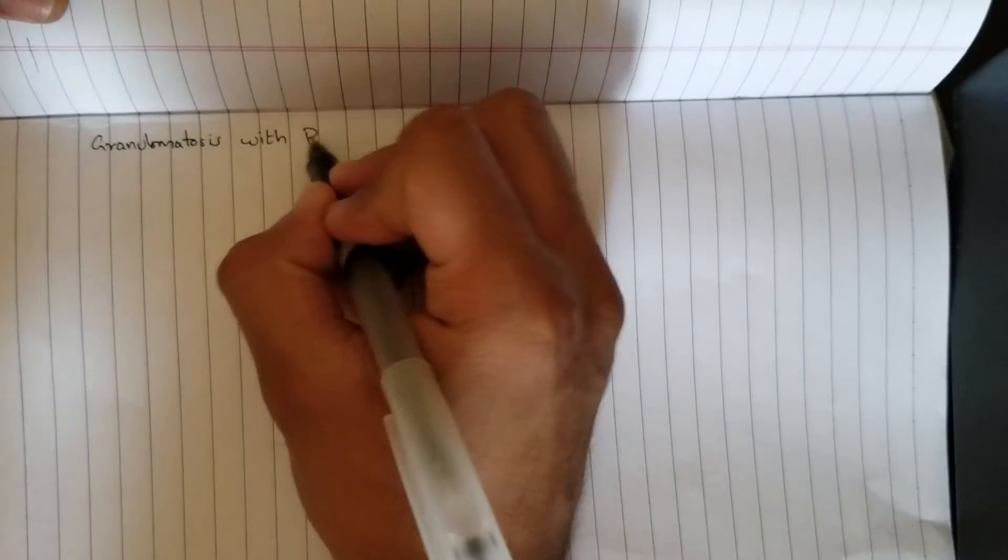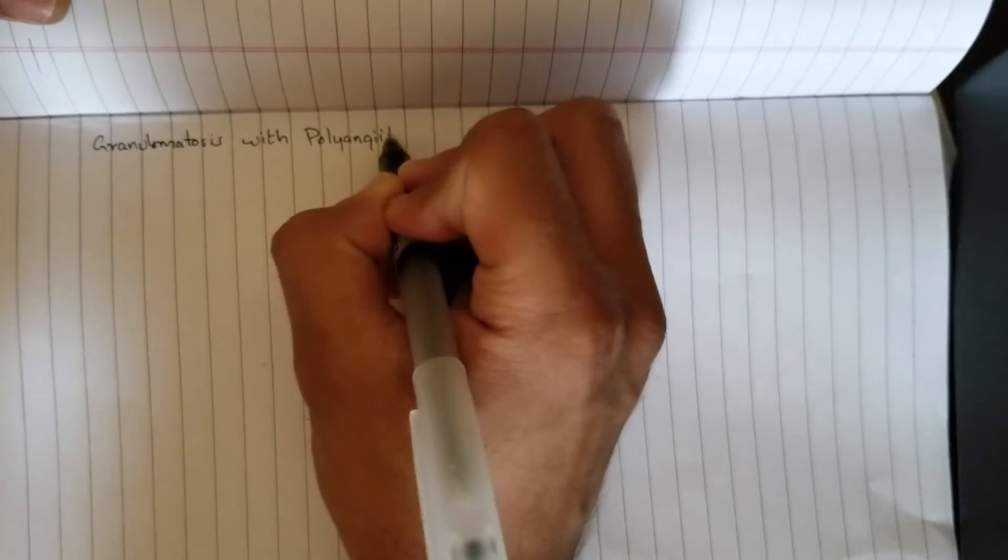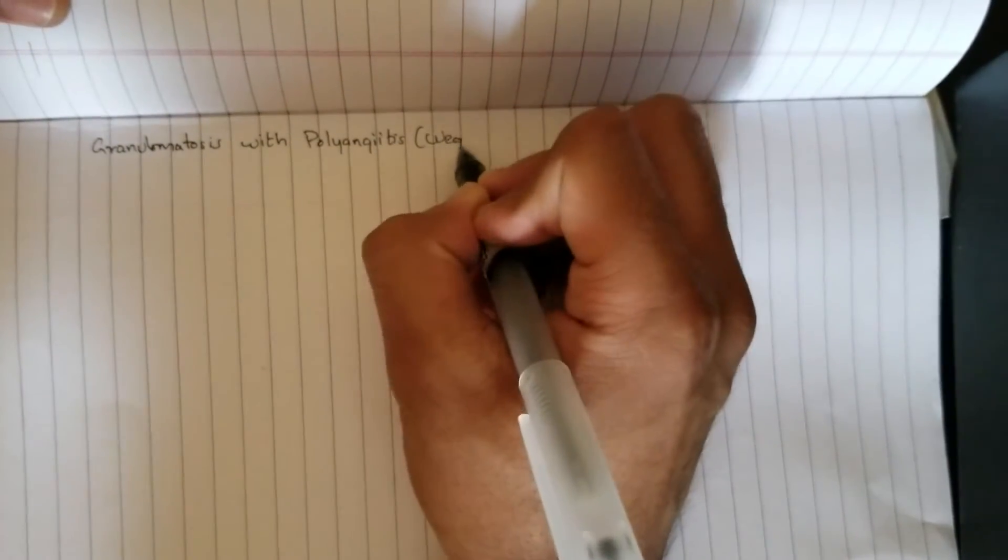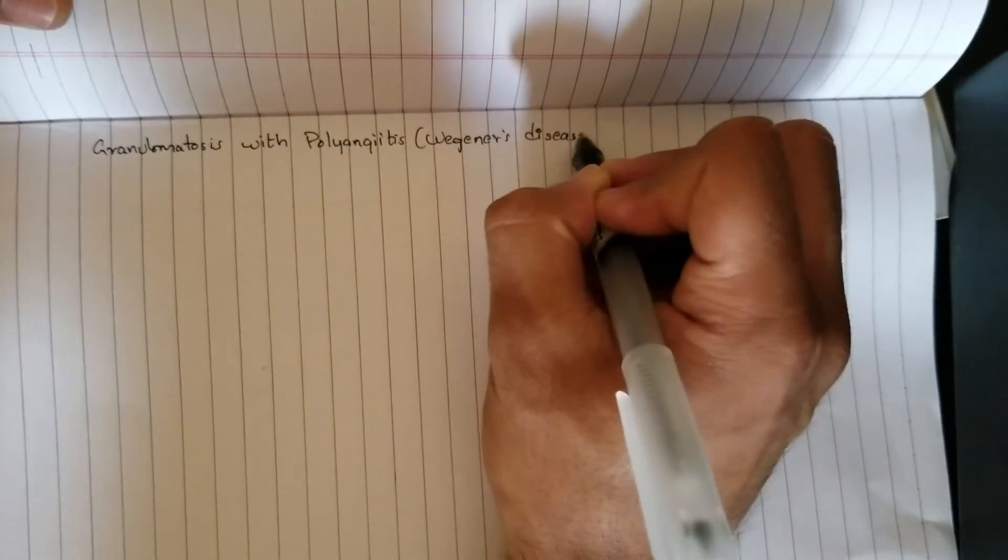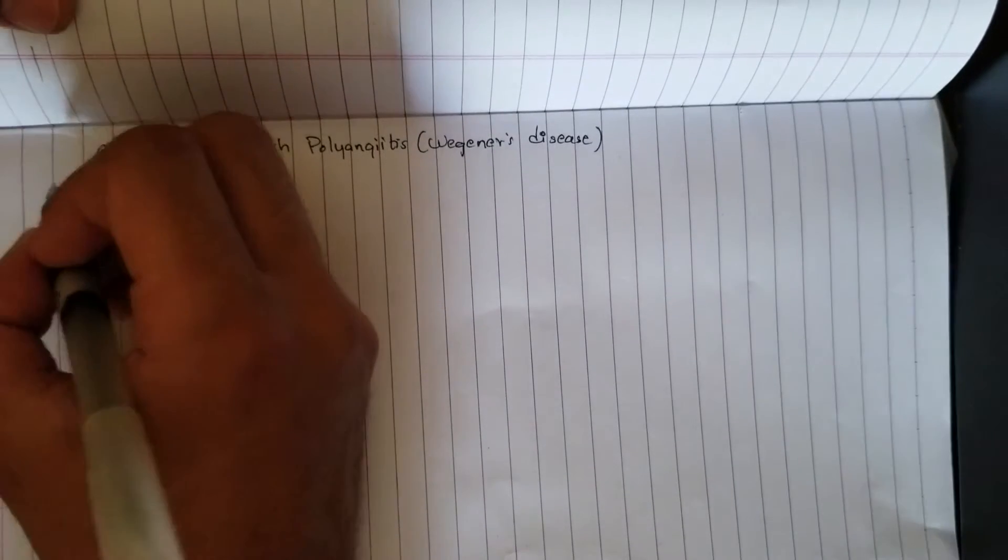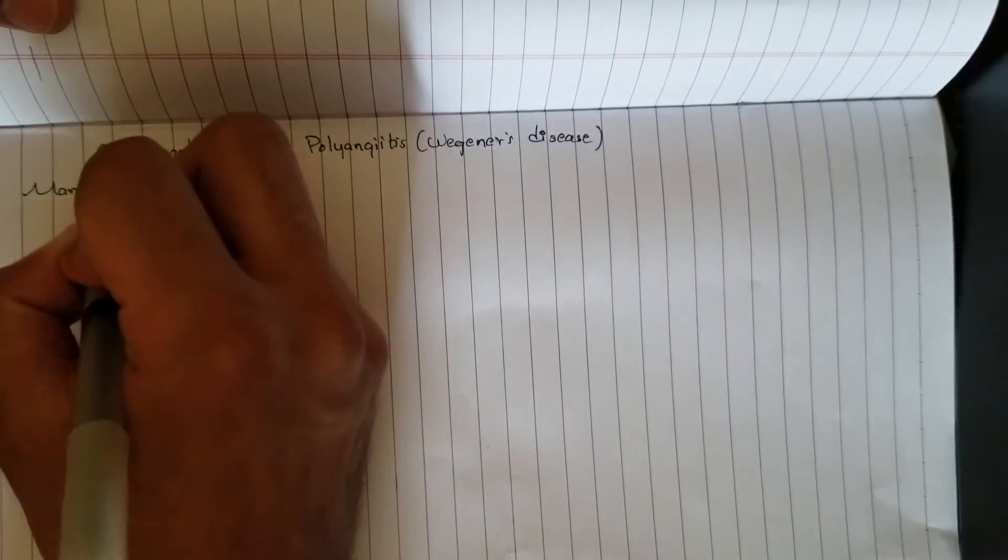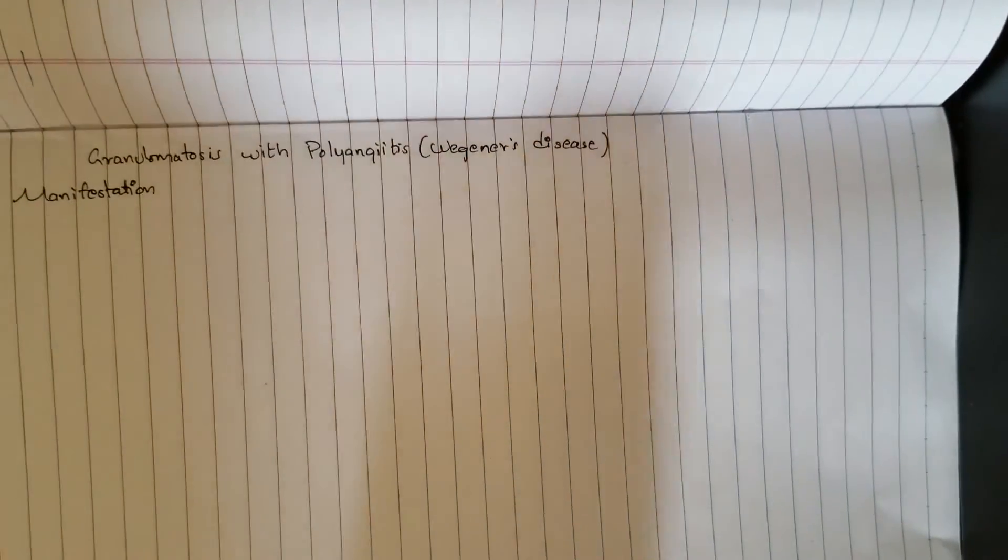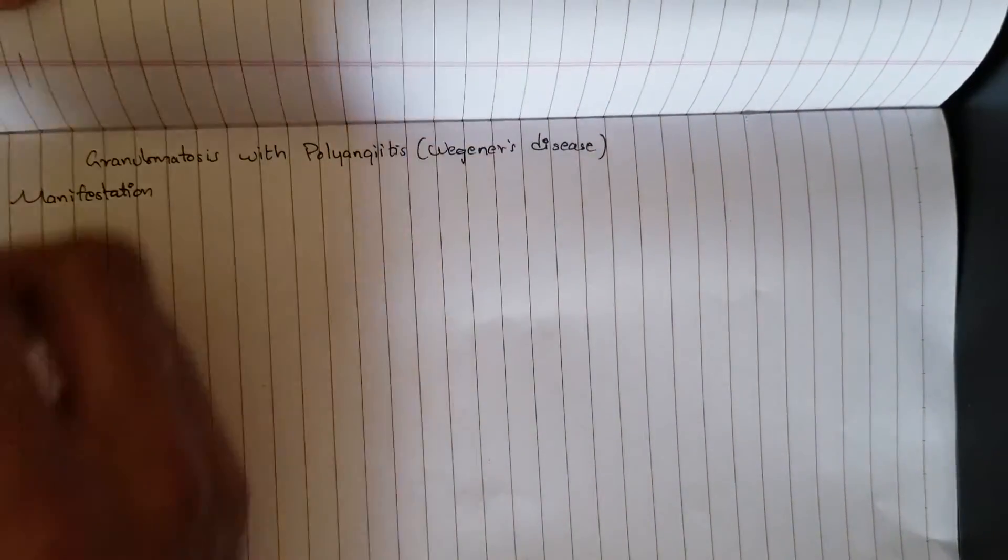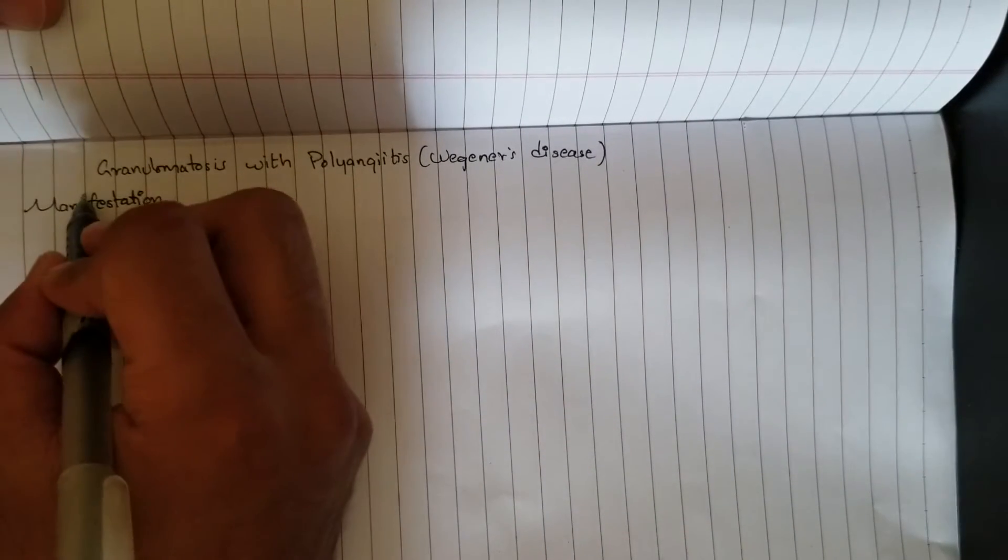Hello guys, yesterday I was starting this topic granulomatosis with polyangitis, also known as Wegener's disease. When I came to its manifestations, there were lots of them, so I decided to make a mnemonic for these and share it with you guys.